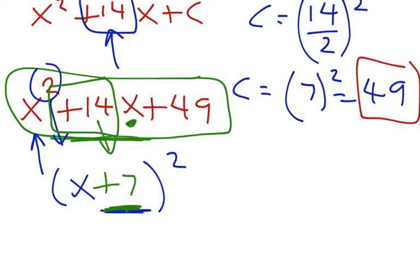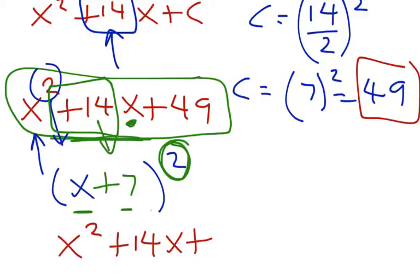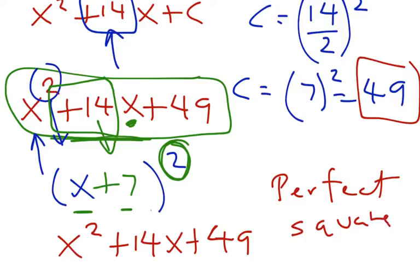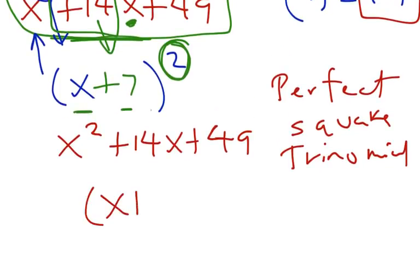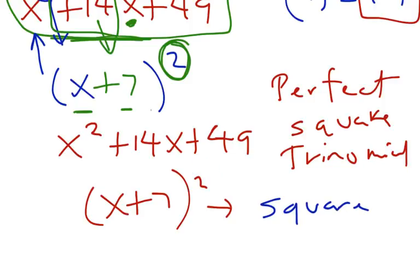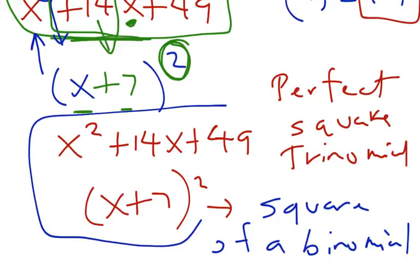Half of 14 is 7. This is called the square of a binomial — two terms. So that's my answer. The perfect square trinomial is x squared plus 14x plus 49, and x plus 7 to the second power is called the square of a binomial, because there's a 2 as the exponent. This is my final answer.